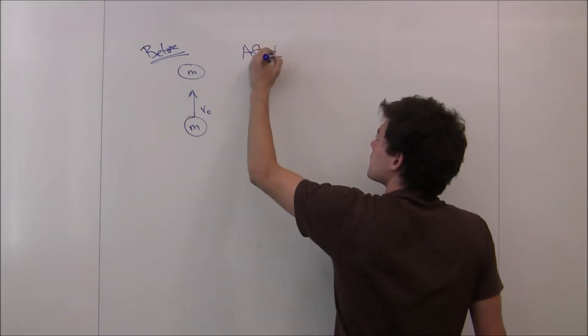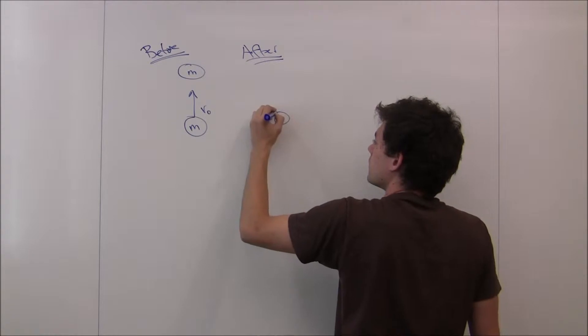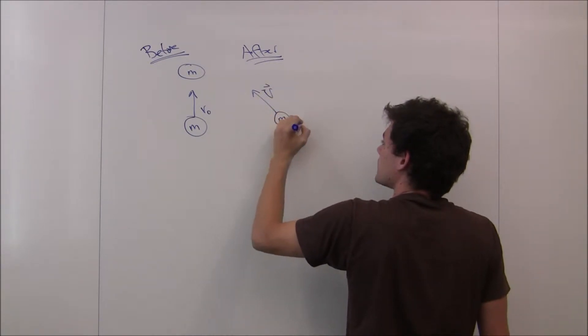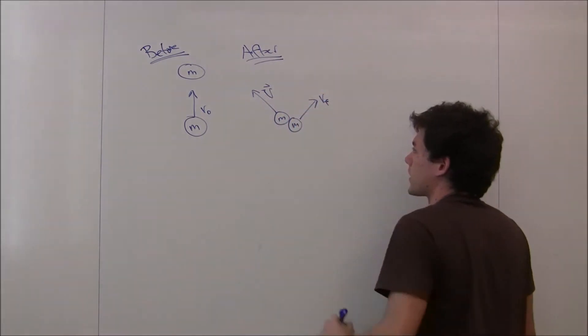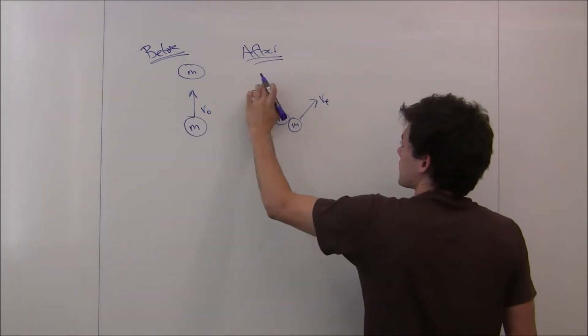After the collision, the two are going to move off. The object ball is going to move off with some speed big V, and the cue ball is going to move off with some speed v-final.